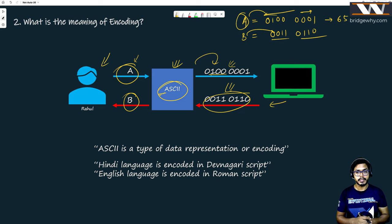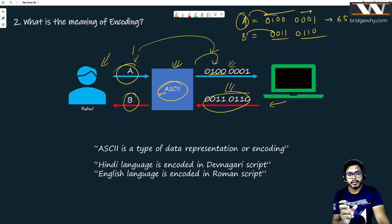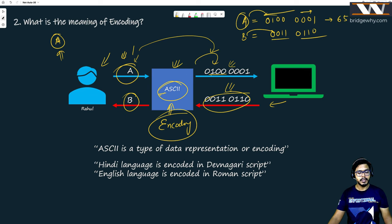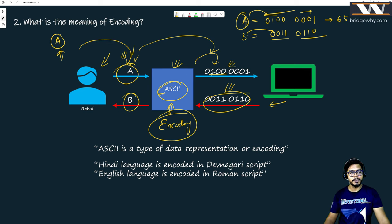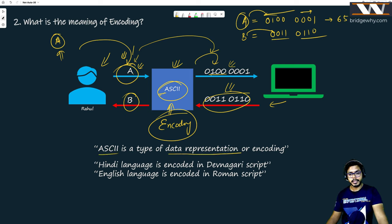ASCII is just a type of data representation or encoding. If you think philosophically, when we pronounce the letter 'A', that sound is being represented by the symbol 'A' — so we are doing encoding there also. 'A' and 'B' are encoded representations of sounds. ASCII or any character encoding scheme is a type of data representation — encoding.